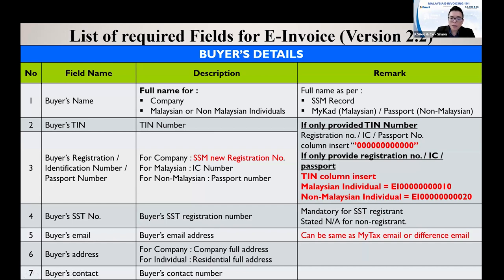For foreign suppliers where you don't have a TIN number, you can use the general number. If a Malaysian individual customer only provides you with their IC number and not their TIN, you can key in 'EI10' as the TIN. For non-Malaysians, use 'EI20' — '20' is for non-Malaysian, '10' is for Malaysian. You also need the buyer's SST number if applicable, email address, full address, and contact number.